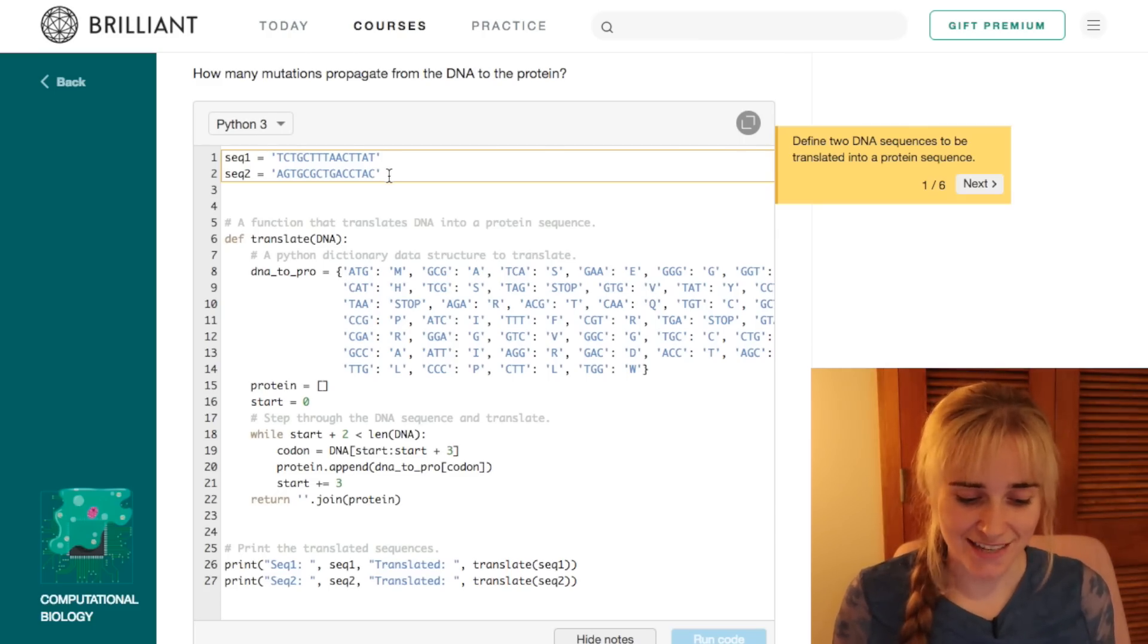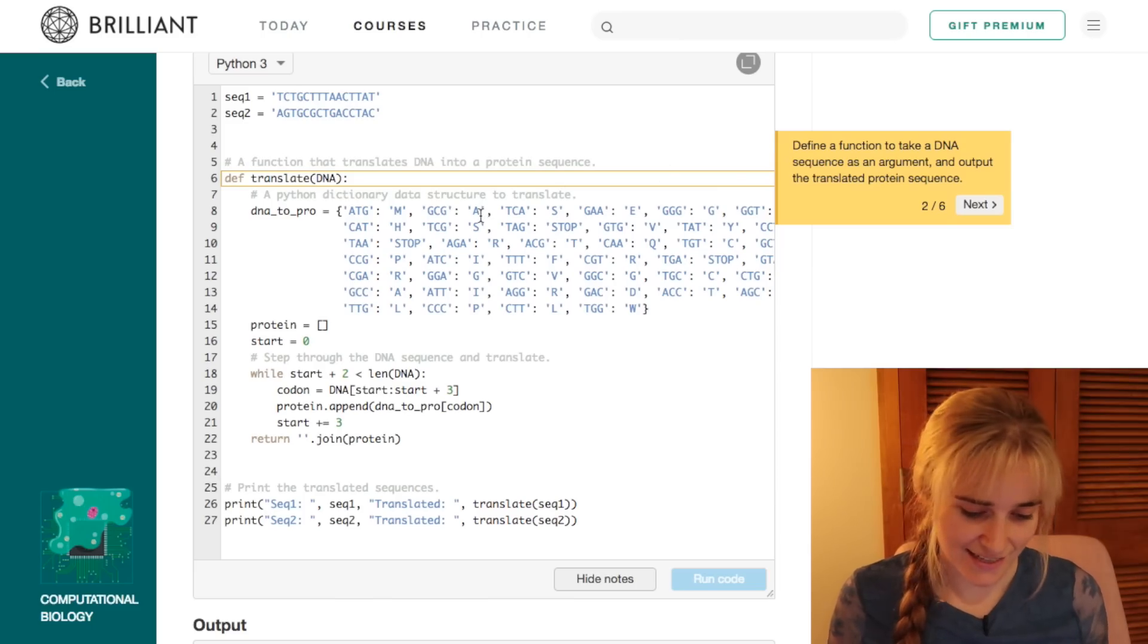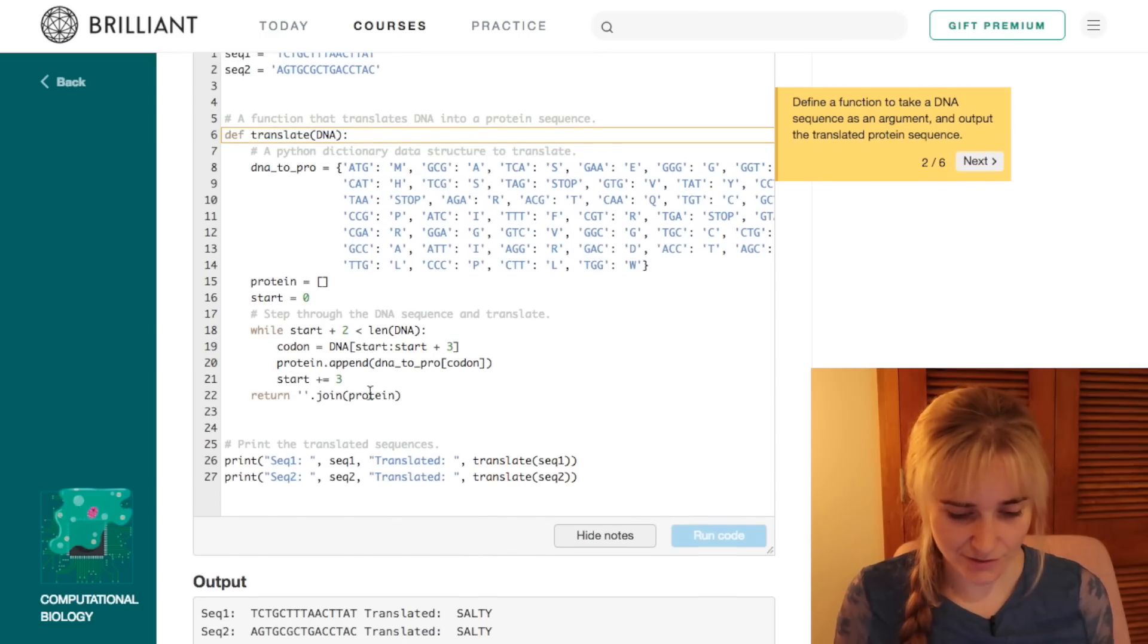So let's see how you do that in code. We're defining our two DNA sequences to be translated. We then define a function translate which takes that DNA that we've defined and outputs our translated protein sequence at the end. It returns it.